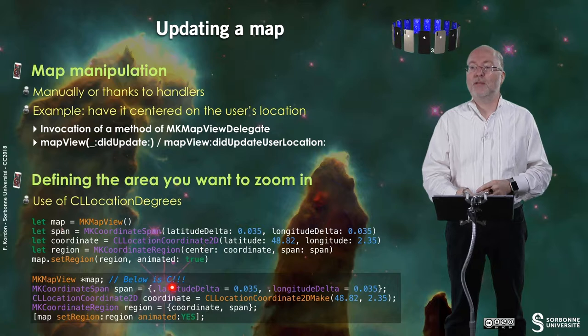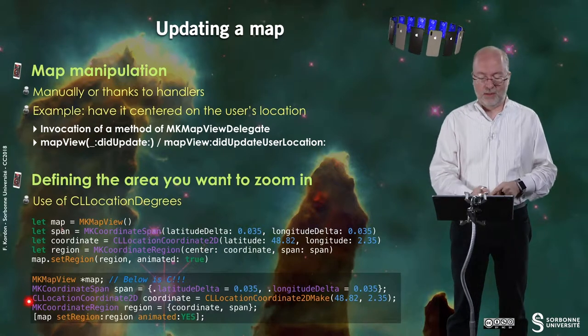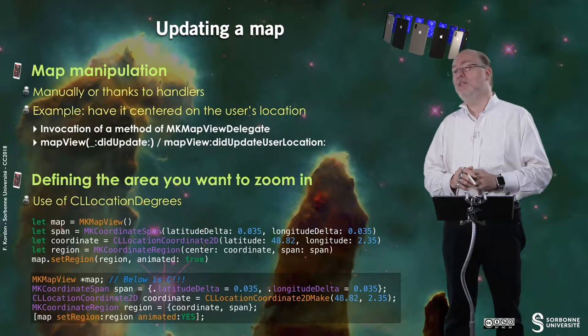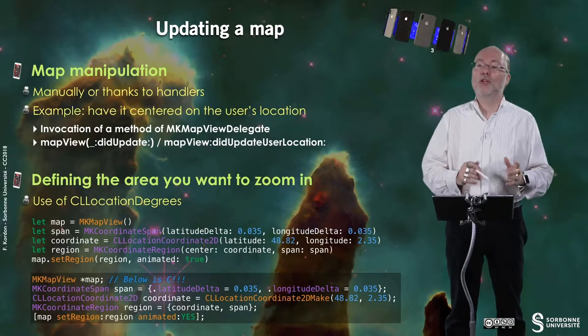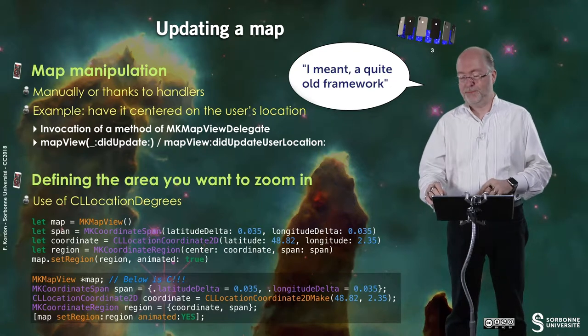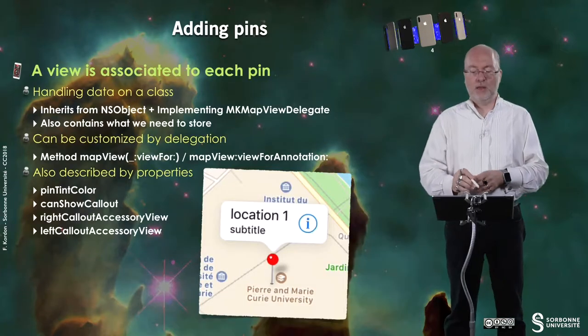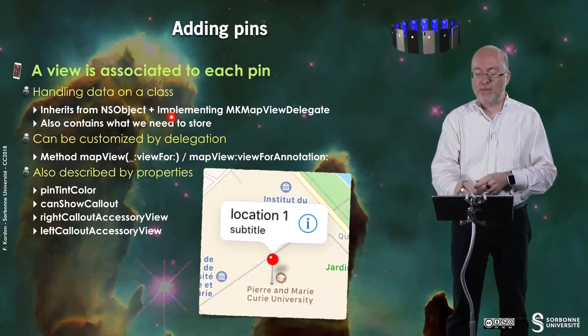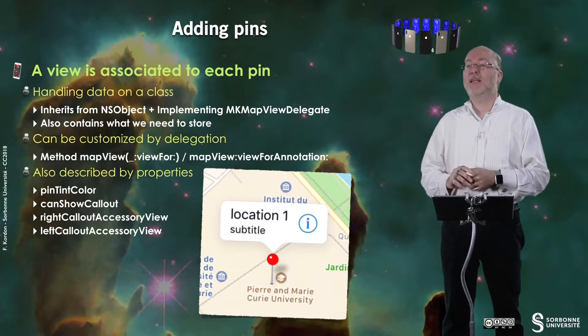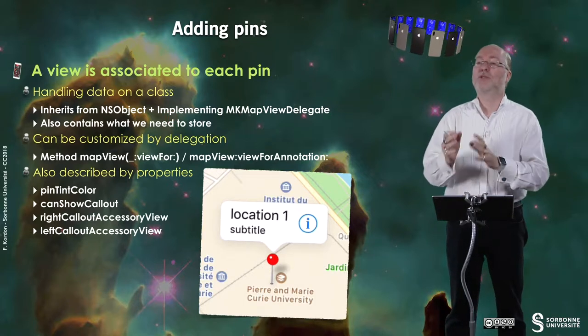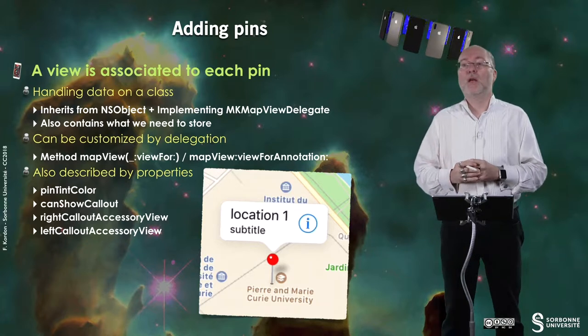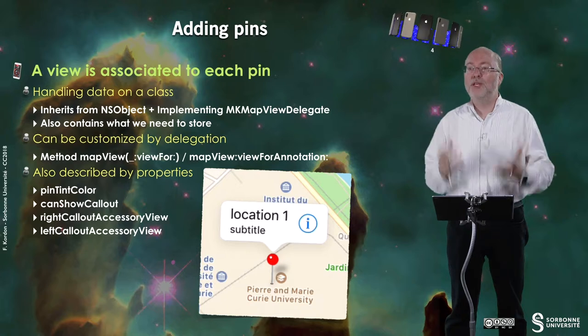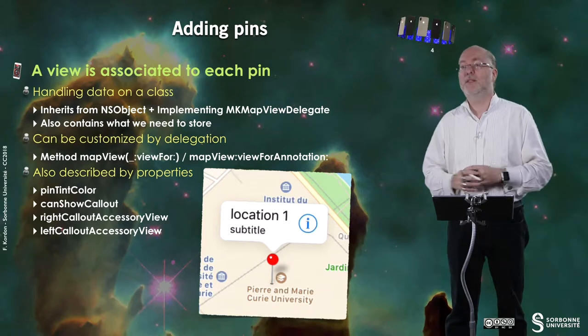You have exactly the same code in Objective-C. You will notice that part of the Objective-C is in fact C, because Core Location is a quite old protocol. You are also interested in adding pins to your map, so there is a view associated to each pin. You handle data in a class that inherits from NSObject and that must implement MKAnnotation. Note that this protocol just exports properties or attributes, and you can of course add what you need to store in this information.